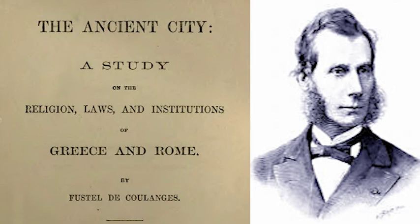Fustel de Coulanges, basing himself only on surviving inscriptions and on the mass of surviving classic literature — for in 1864 the archaeological record barely existed — was able to see, underneath the Olympian surface of the ancient playwrights, philosophers, historians, orators, poets, and moralists, a world in which a primitive religion dominated every aspect of life. In 1864 there existed few good reports of the life of primitive peoples, which some years later were to help such scholars as James George Frazer and W. Robertson Smith to recover, at least in some measure, the early history of religion. Yet Fustel was able to discern what we now think of as a more or less accurate picture of the overwhelming role of religion in the ancient world, and in early times, from the documents alone.